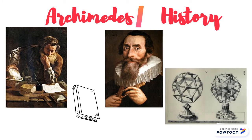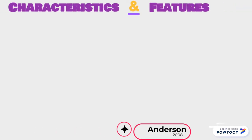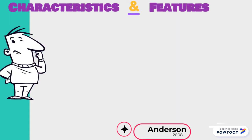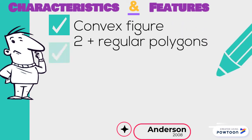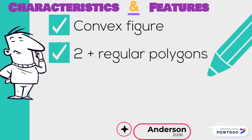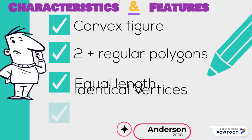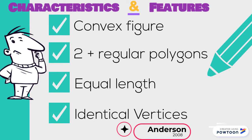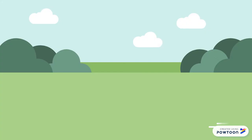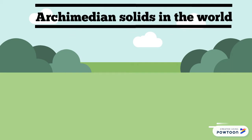This work went on to become the Kepler solids. Archimedes's work highlighted the characteristics which must be evident for a shape to be an Archimedean solid: the shape must be a convex figure made up of two or more regular polygons, all edges must be equal in length, and all vertices must be identical.